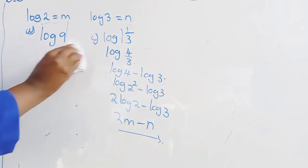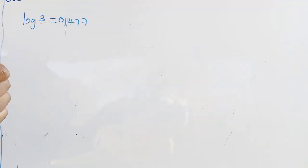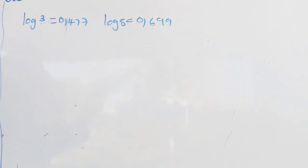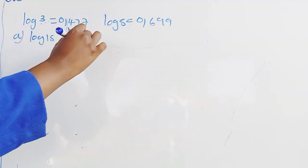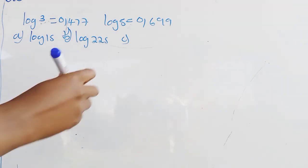Moving on to Question 11. We are given that logarithm of 3 is 0.477 and log 5 is 0.699. Remember, if we don't have a base stated, it simply means we are in base 10. Part A of the question asks us to find logarithm of 15, Part B asks for logarithm of 225, and there is also log 0.6.